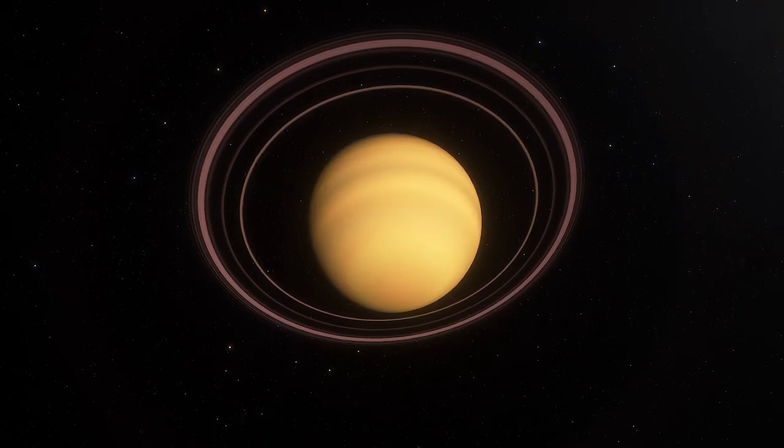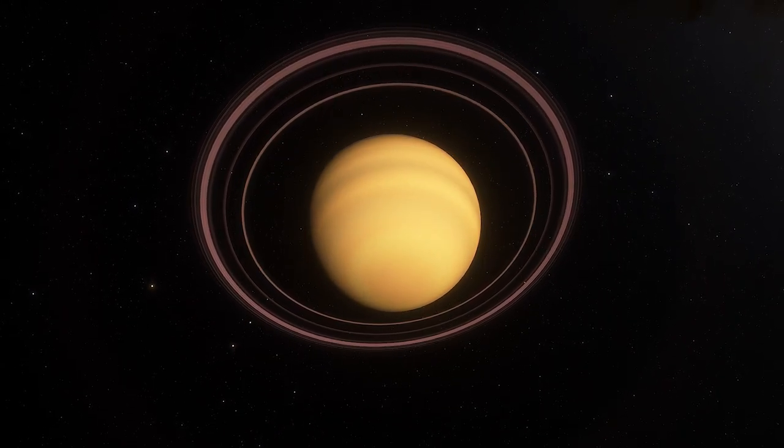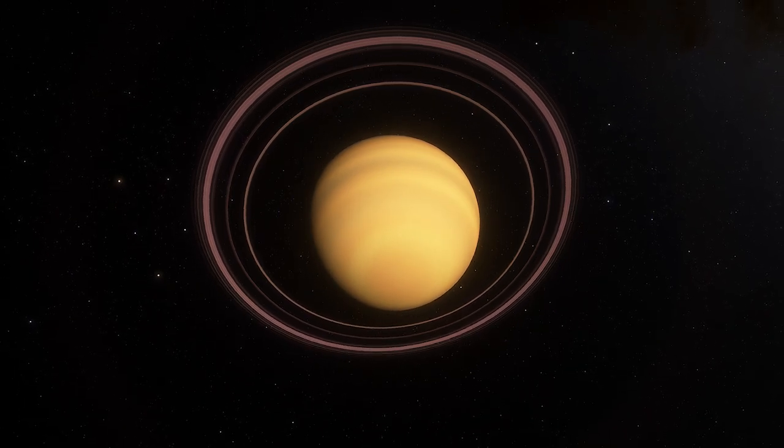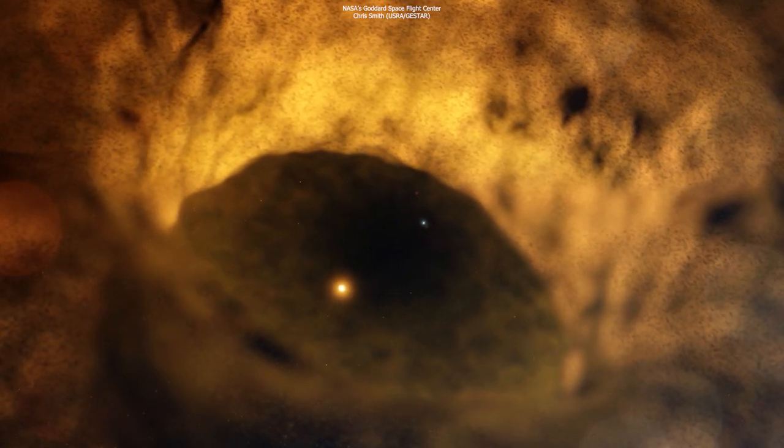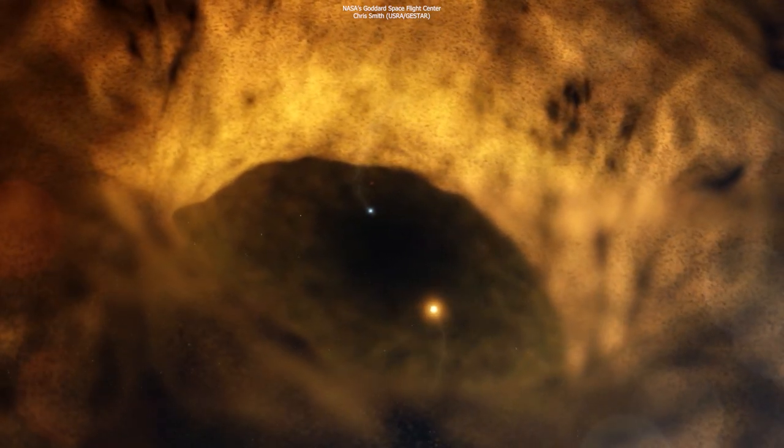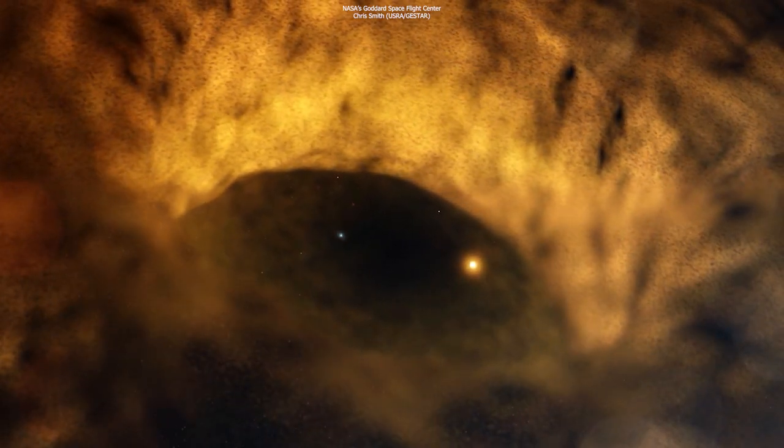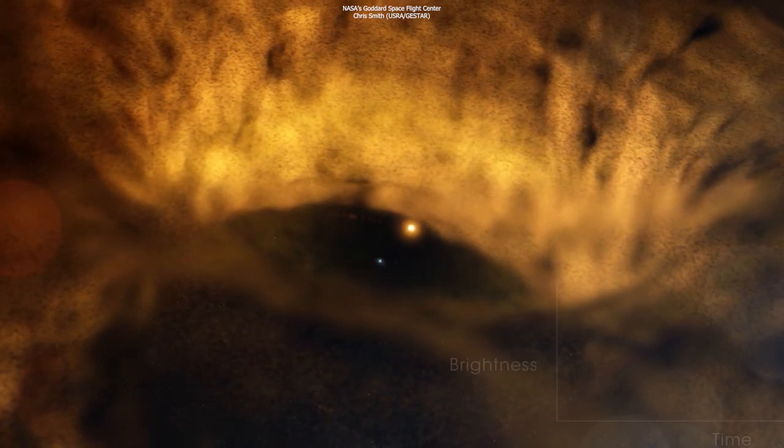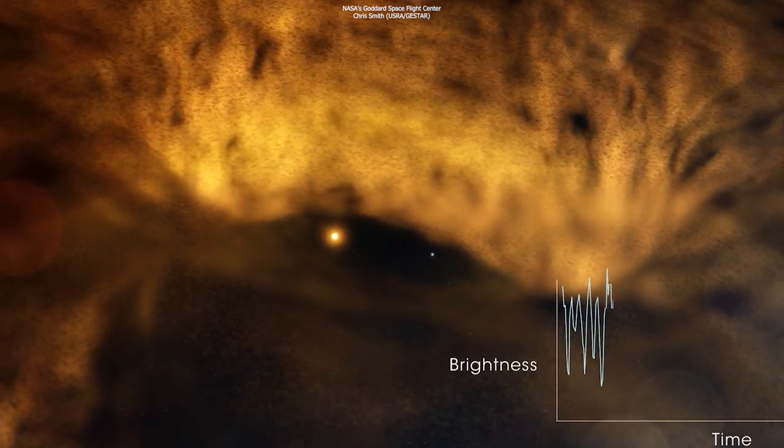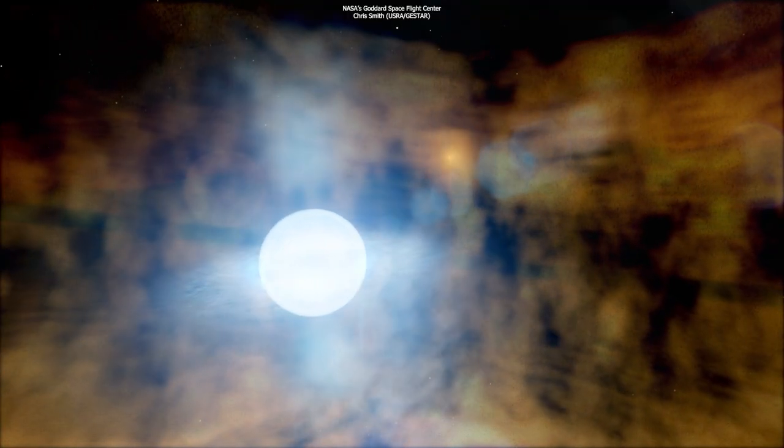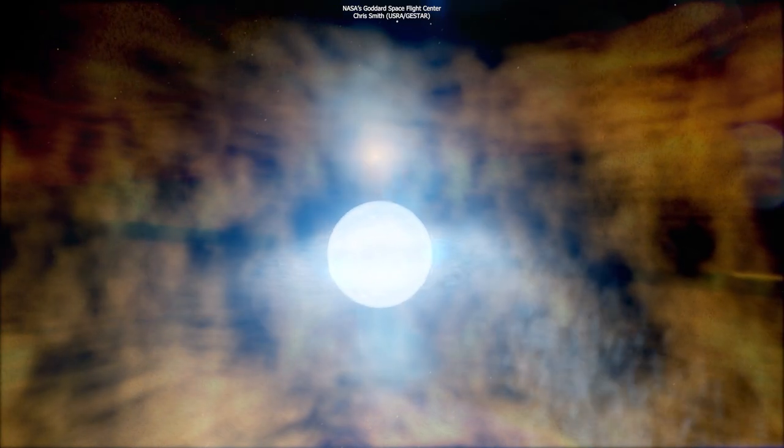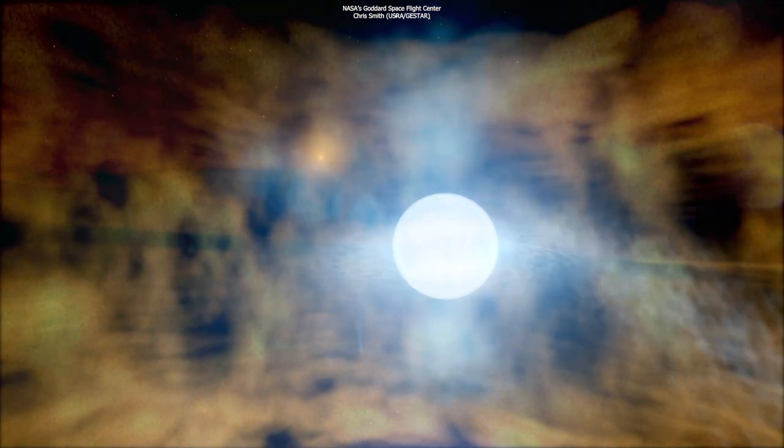But if ROXS 42BB formed like a binary star, then it might as well be a brown dwarf. A binary star formation occurs when two protostellar clouds collapse together, forming two separate clumps of gas and dust. As the two clumps continue to collapse, they begin to orbit each other and become gravitationally bound. Over time, they continue to accrete gas and dust from their surroundings, increasing in mass and size.